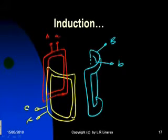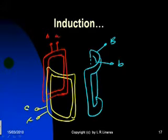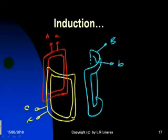Consider the scenario: the three stationary coils we've seen before, now in a 3D representation — phase A, phase B in blue, and phase C in yellow. If we apply a set of three-phase currents to those three coils, a rotating magnetic field will appear in the center of that setup.